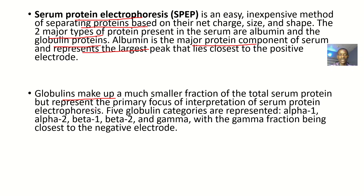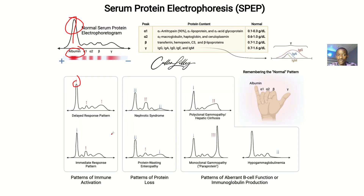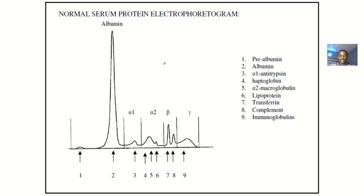Five globulin categories are present: alpha-1 globulin, alpha-2 globulin, beta-1 globulin, beta-2 globulin, and gamma globulin, with the gamma fraction being the closest to the negative electrode. You can see albumin here, and the gamma globulin is closest to the negative electrode, just as described.